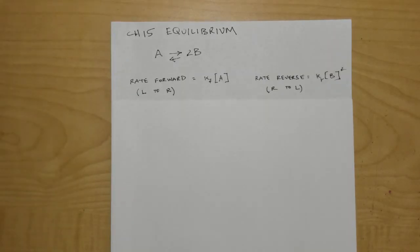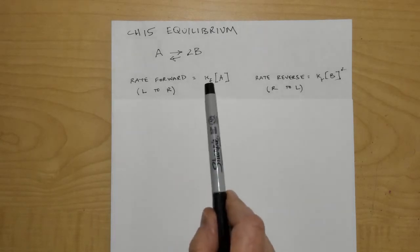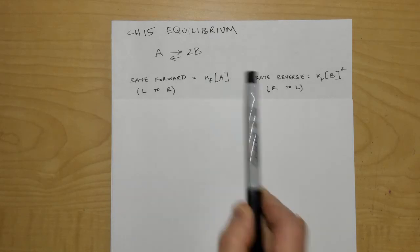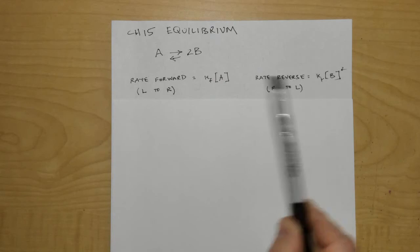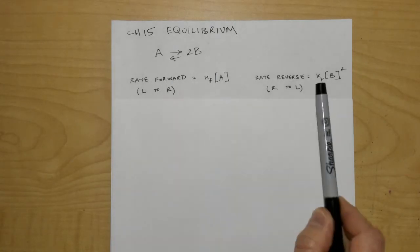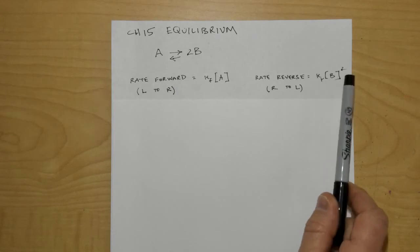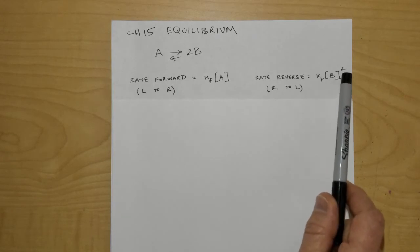To find out where we sit as far as equilibrium goes, we'll go back to Chapter 14 and look at the rate of the forward reaction versus the rate of the reverse reaction. The rate expression for the forward reaction: rate equals K_f times the concentration of A, to the first power. And the rate of the reverse reaction, going right to left, equals K_r times the concentration of B squared — a second order reaction.